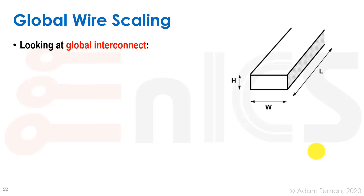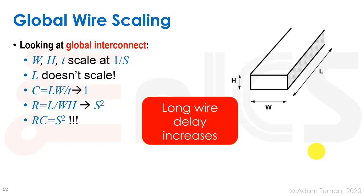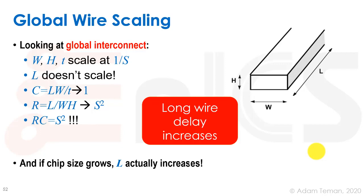For global interconnect, w, h, and t all scale at 1/s, but l doesn't — the global wire stays the same length. That means parallel plate capacitance doesn't scale, staying at 1. The number of squares increases, so resistance goes up by s². Our RC delay through the wire therefore goes as s², which is really bad — and since transistor delay is 1/s, global wire delay is actually s³ times worse than transistor delay. And if chip size grows, l actually increases, making it even worse.